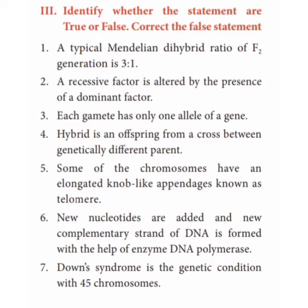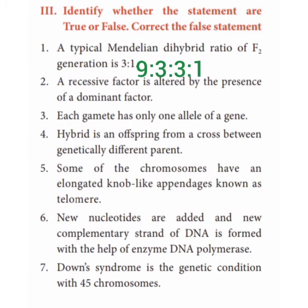Fifth, the inheritable changes in the amount or the structure of a gene or a chromosome is called a mutation. State true or false: First, a typical Mendelian dihybrid ratio of F2 generation is 3:1 — False; the F2 generation ratio is 9:3:3:1. Second, a recessive factor is altered by the presence of a dominant factor — False.